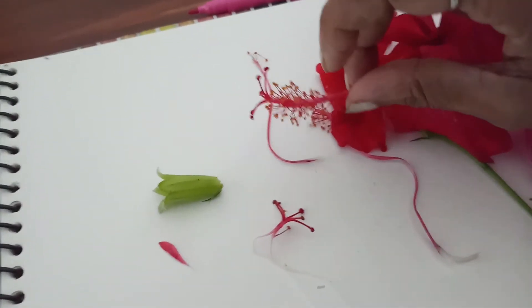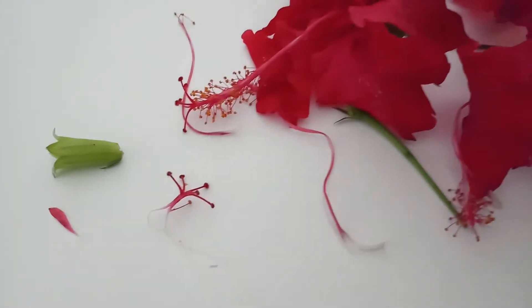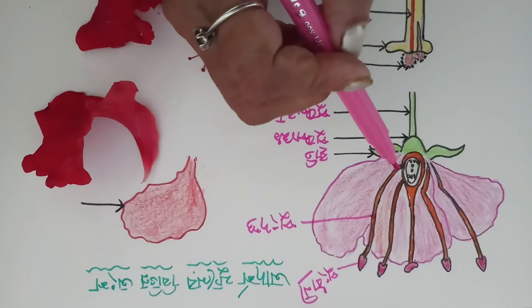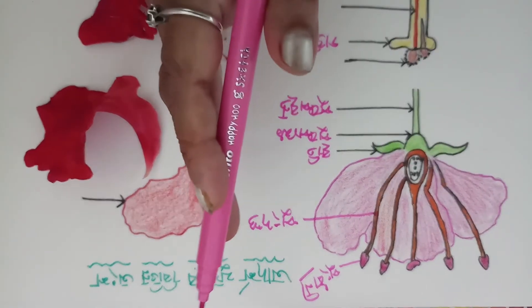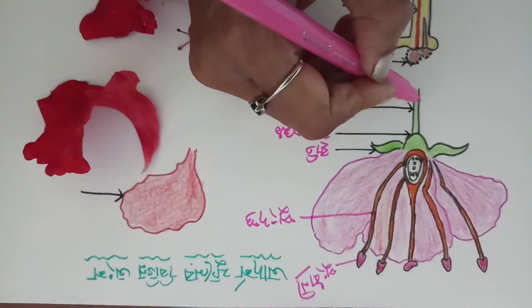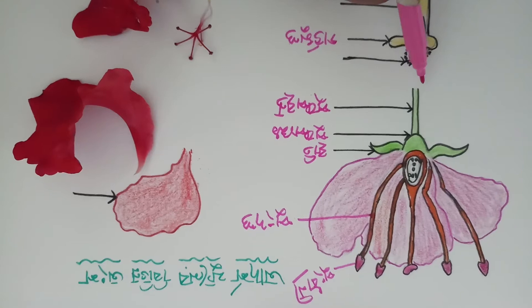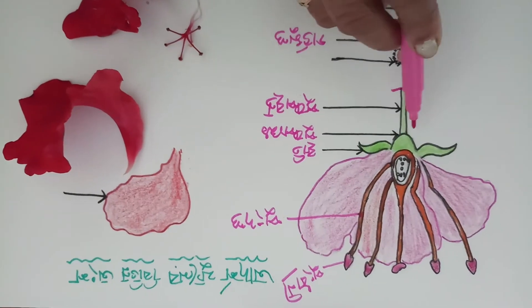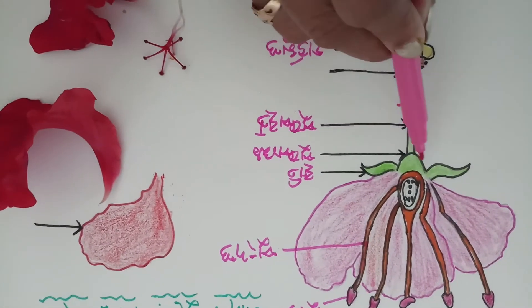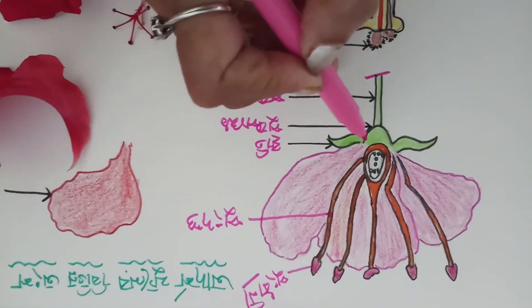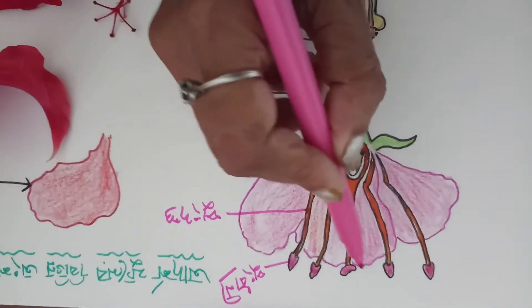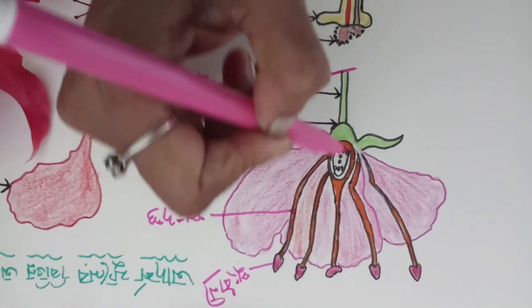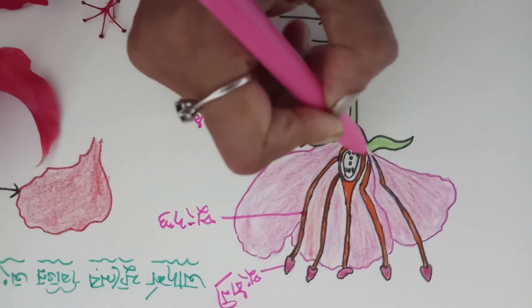ফুল এনে এটা তোমরা করতে পারবে। এখানে থাকে পরাগযোগ হয় আর এখানে পুংকে পরাগরেণুগুলো থাকে — তখন পরাগযোগ হয়। এটালো ফুলের পুষ্পবৃন্ত — এই যেকের একটু মোটা মোটা অংশ থাকে বলছে পুষ্পাক্ষ। তারপরে সবুশ পাতা পাতার মতন থাকে — এটা হুষ্পাখে বৃতি। তার পরে এগুলো হচ্ছে পাপড়ি — সবগুলো একসঙ্গে সক্তমতন এই পুষ্পাক্ষের উপরে একটা পুরো ঢাকা থাকে।